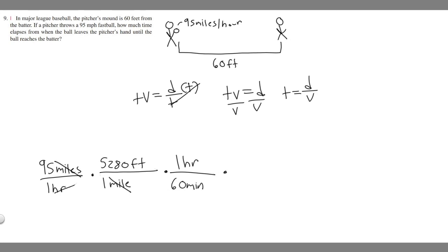We want it in feet per second so we need to get rid of minutes too. For every one minute there's 60 seconds. We'll have 95 times 5,280 divided by 3,600. If you do that you're going to get 139 feet per second.